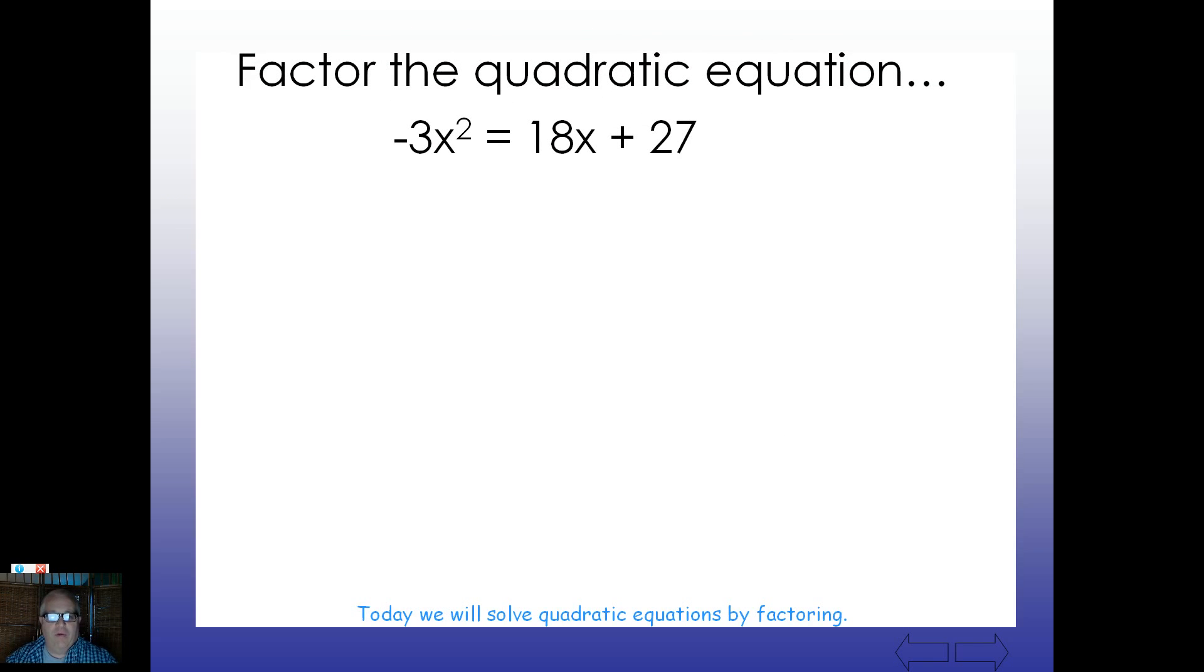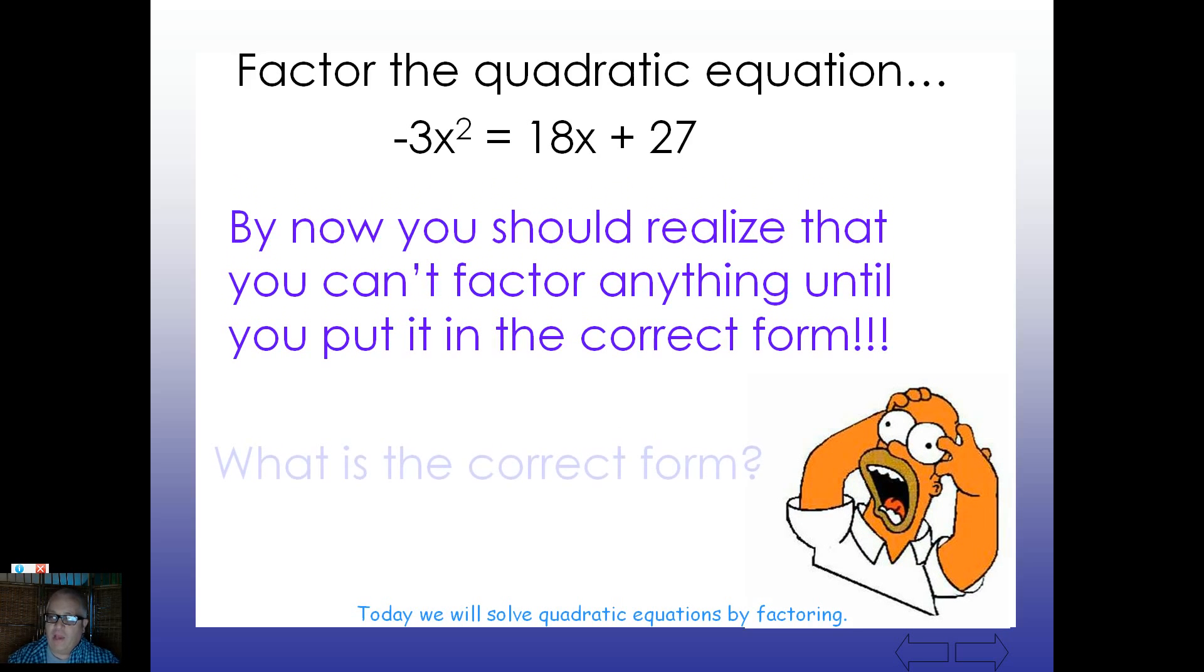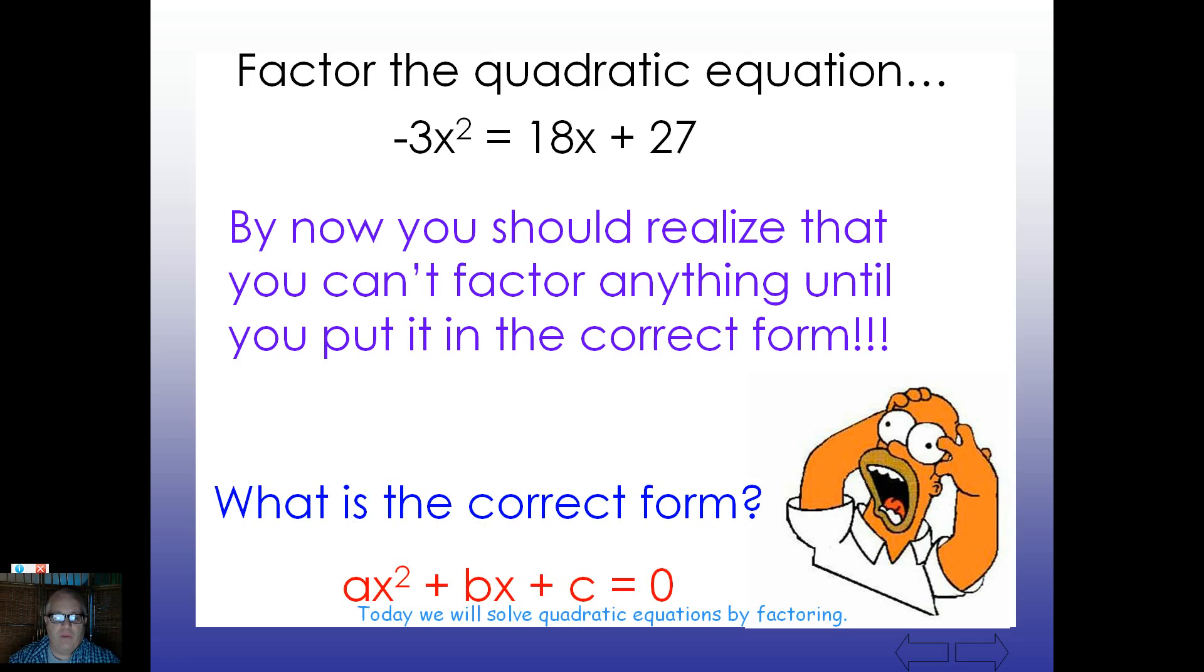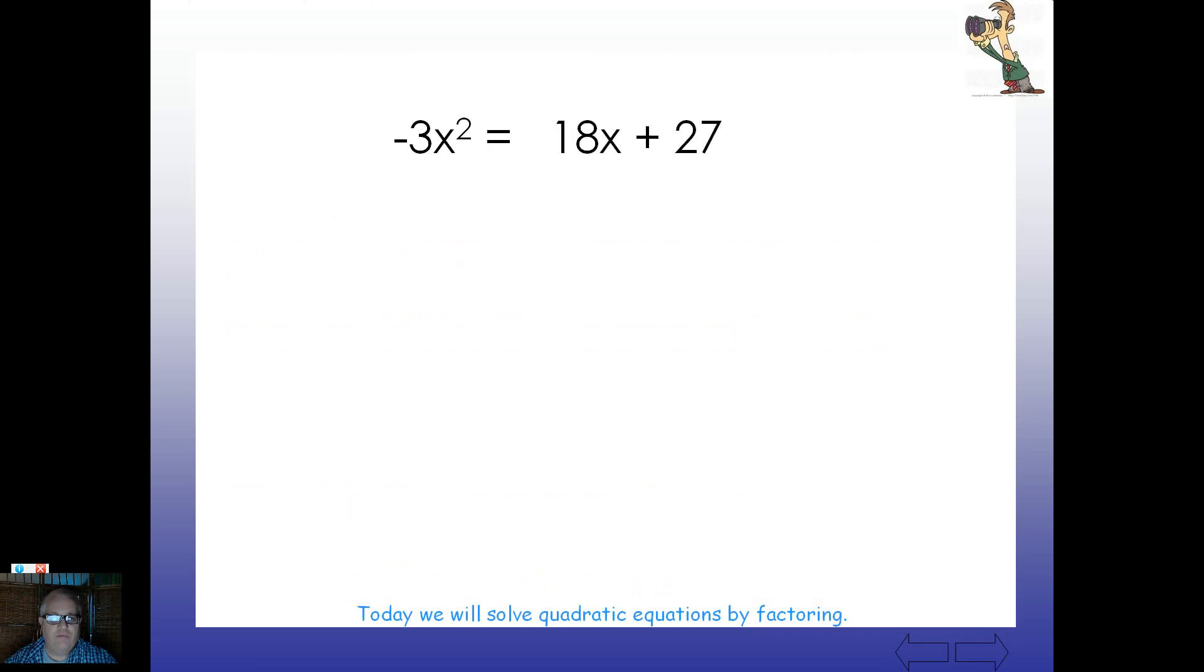How about this one? Now, of course, this one here looks kind of a little messy. So by now, you should realize that you can't factor anything until we put it in the correct form. So what's the correct form here? Well, what I'm going to do is notice this negative 3x squared set over here. I really don't want to deal with a negative a if I don't have to. And we really don't have to. We have a lot of control here if we just take some steps. Remember, this is the correct form we're looking for. Right down here, ax squared plus bx plus c equals 0. And notice that a is, generally speaking, positive. It doesn't have to be. But by most accounts, we want to make a positive.